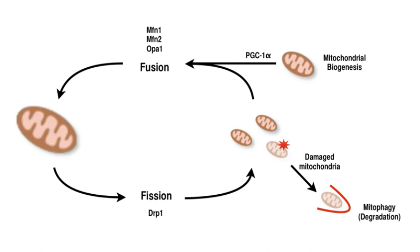PGC-1-alpha, a member of the peroxisome proliferator-activated receptor gamma family of transcriptional coactivators, is the master regulator of mitochondrial biogenesis. It is known to co-activate nuclear respiratory factor 2 (NRF-2), and together with NRF-2 coactivates nuclear respiratory factor 1 (NRF-1). The NRFs, in turn, activate the mitochondrial transcription factor, which includes both structural mitochondrial proteins as well as those involved in mtDNA transcription, translation, and repair.